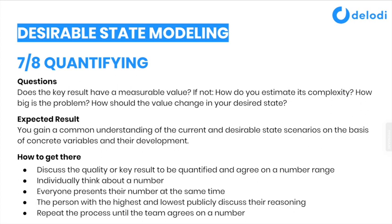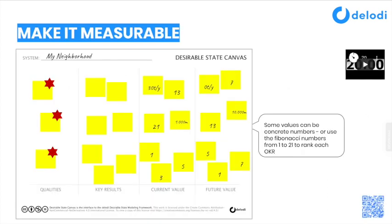This might sound like a lot, but once the team has done it a couple of times, it becomes very quick. The result looks like this, and we will do this for all of the key results — for the current state of the system, what does the system look like now, and then for the future state of the system, how do we want these key results to change over time? What would be desired? This is, as the name says, the most crucial element in this process.